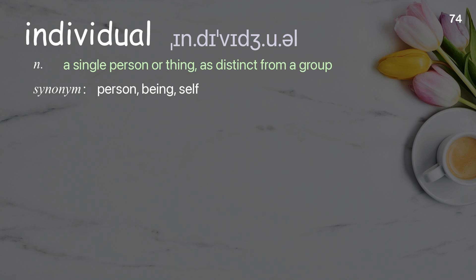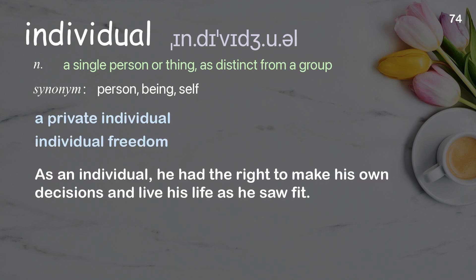Individual: a single person or thing, as distinct from a group. Examples: a private individual, individual freedom. As an individual, he had the right to make his own decisions and live his life as he saw fit.